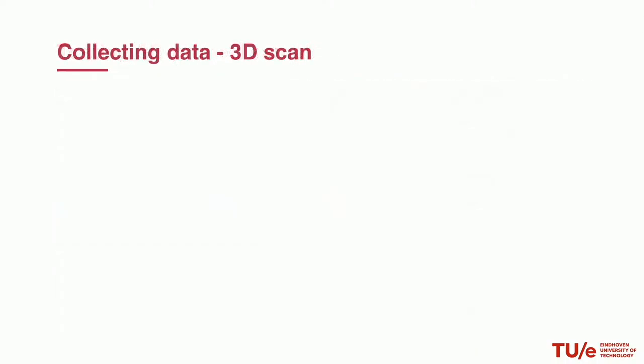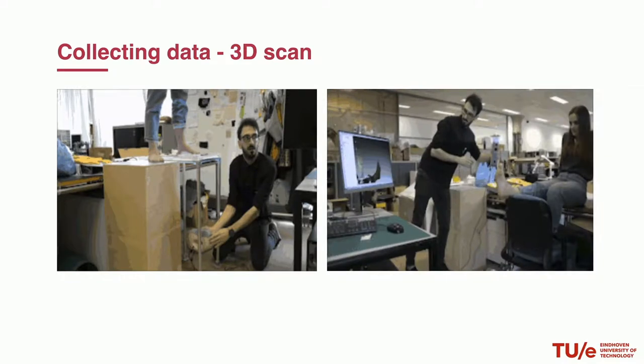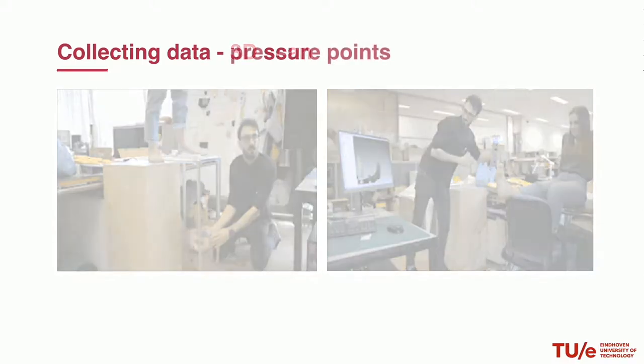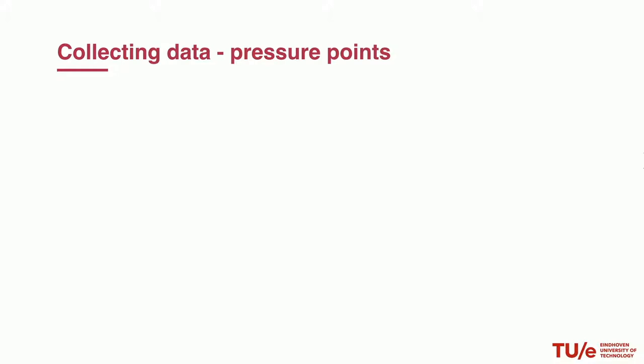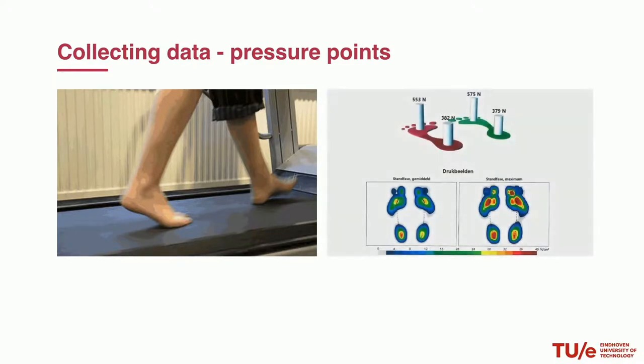The second step in the process, we collected the user data by scanning the foot in a loaded position as well as in an unloaded position. This data was crucial to understand how the foot changes when people are walking. Secondly, we used these data points to develop new insights into the foot by having the user walk on a treadmill. With the data from the different pressure areas from the foot, we could assign mechanical metamaterial structure behavior to the foot's dynamic needs. For example, by mapping the structure behavior to certain areas of the foot which are represented on the right with different colors on the image pressure maps.